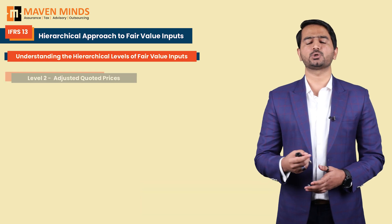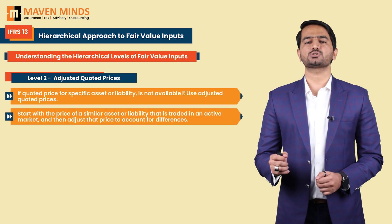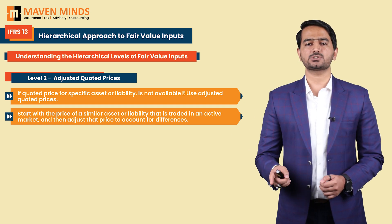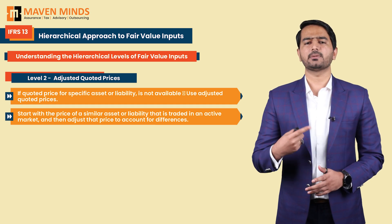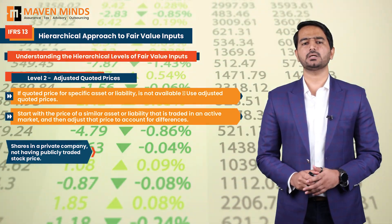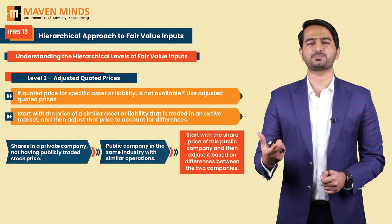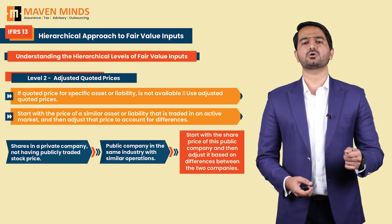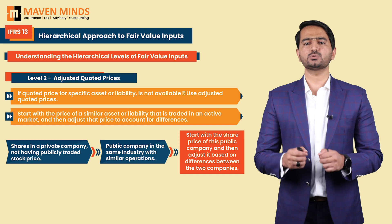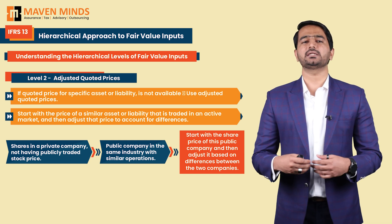This is where Level 2 comes into play. Here you use an adjusted quoted price — you start with the price of a similar asset or liability traded in an active market and adjust it to account for differences. For example, imagine you own shares in a private company with no publicly traded stock price, but there is a public company in the same industry with similar operations. You adjust the public company's share price based on differences such as market share or profitability.